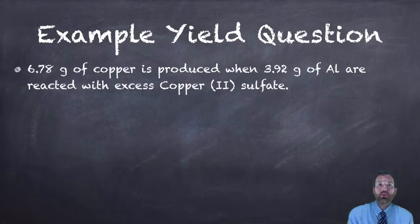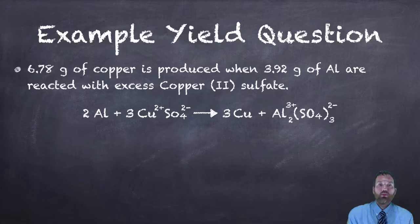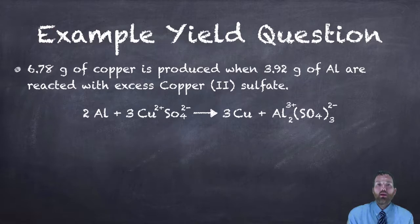Here's an example yield question: 6.78 grams of copper is produced when 3.92 grams of aluminum are reacted with excess copper(II) sulfate. Go ahead and try to write this equation out before we work on the yield. Here is what the equation looks like — aluminum reacts with copper sulfate to make copper and aluminum sulfate. Remember to write your charges, crisscross, and then balance when you are done.